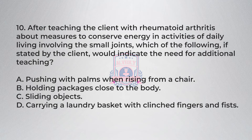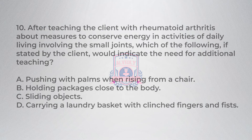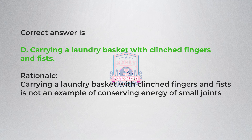Question ten: After teaching the client with rheumatoid arthritis about measures to conserve energy in activities of daily living involving the small joints, which of the following, if stated by the client, would indicate the need for additional teaching? Carrying a laundry basket with clenched fingers and fists is not an example of conserving energy of small joints.